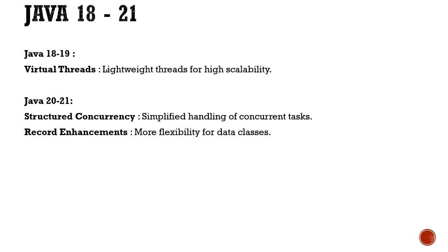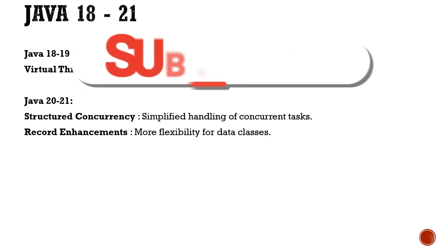Java 18 and 19 introduced the concept of virtual threads — highly scalable and lightweight threads. Java 20 to 21 brought structured concurrency for simplified handling of concurrent tasks, providing a different, simpler way of managing them. Additionally, there were enhancements to records — the data class feature introduced earlier received more flexibility and improvements.